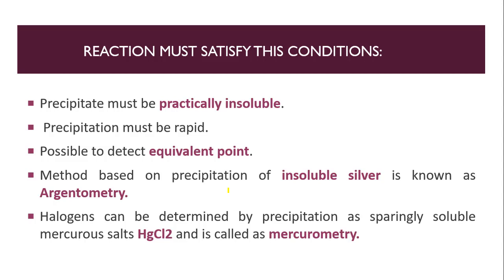A reaction must satisfy certain conditions. First, the precipitate must be practically insoluble. Second, the precipitation must be rapid — it should be a fast process. Third, it should be possible to detect the equivalence point. Whatever precipitate you are getting must be practically insoluble so that you can find the end point of your precipitation titration.